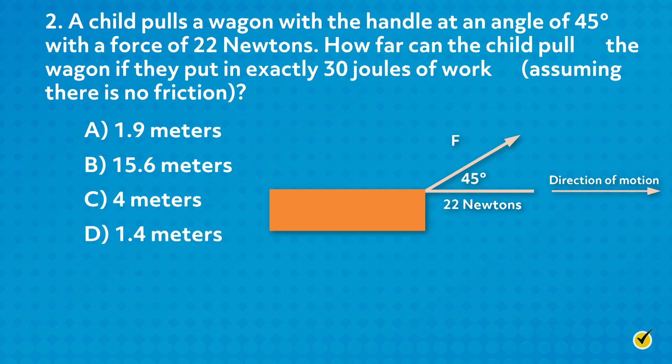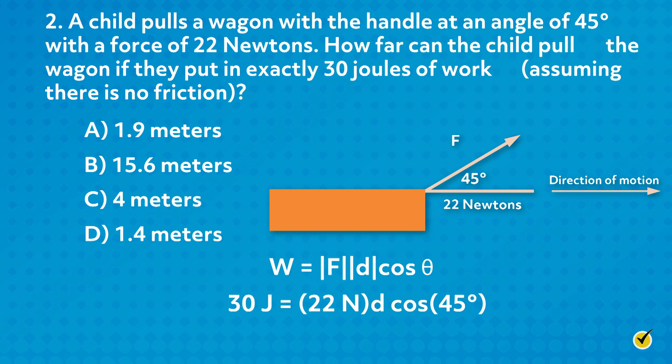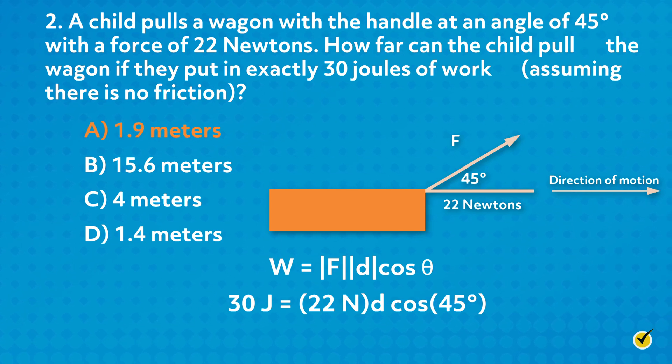Plugging in these values into our equation, we get 30 joules equals 22 newtons times D times the cosine of 45 degrees. Solving for D, we get D equals 1.9 meters. I hope this review was helpful.